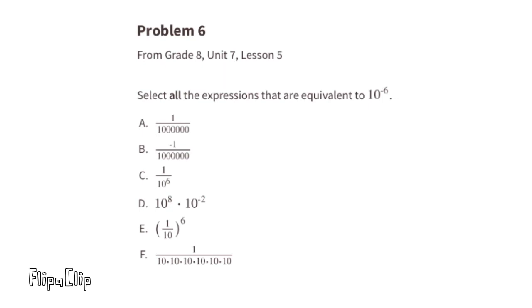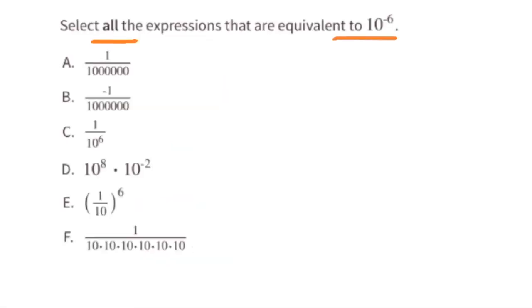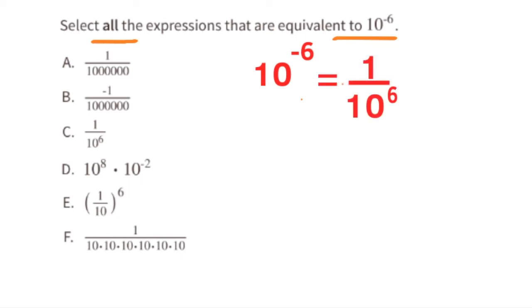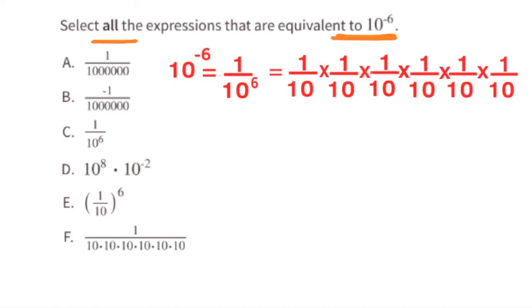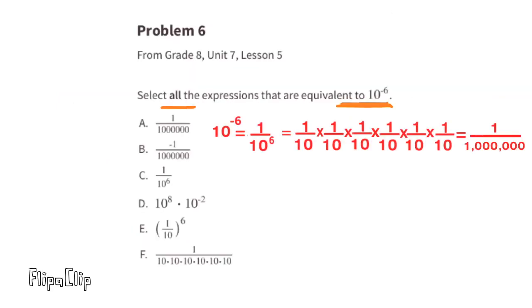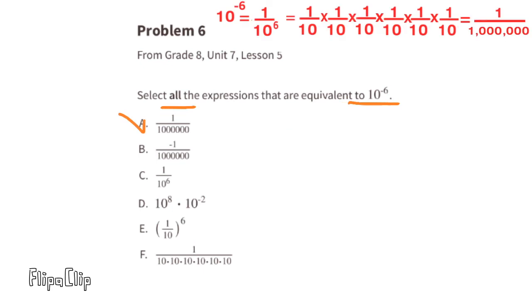Problem six: Select all the expressions equivalent to 10 to the power of negative six. Answer A is one over a million. That is equivalent to 10⁻⁶ because 10⁻⁶ written with a positive exponent is one over 10⁶, which equals one over one million. So we select A.